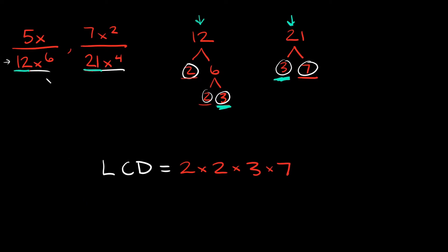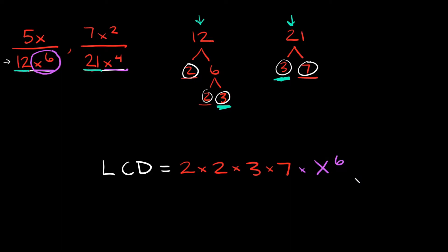Now the last thing we have to do is find the LCD between x to the 6th and x to the 4th — basically just the remaining variables. The way you do that is you pick the bigger one. Here we have x to the 6th and x to the 4th; 6 is bigger than 4, so you would just choose x to the 6th and multiply by x to the 6th.